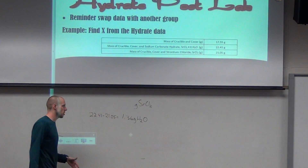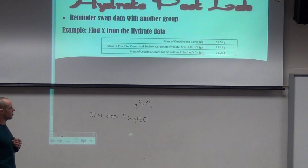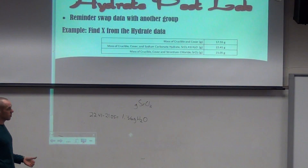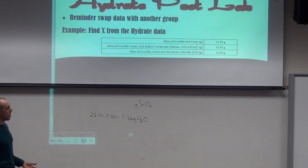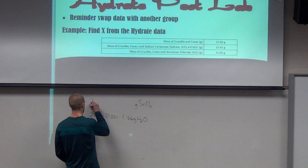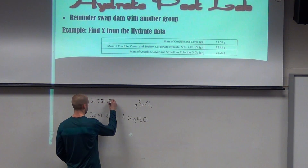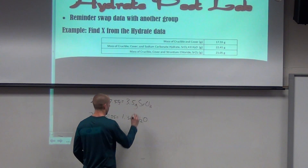Now we have to figure out the mass of the strontium chloride. The 22.41 is with the water, so that doesn't tell us how much the strontium chloride weighs — that tells us how much the hydrate weighs. The one that tells us the strontium chloride mass is the bottom value minus the mass of the crucible and cover. So we take 21.05 minus 17.55, and we get 3.5 grams of strontium chloride.